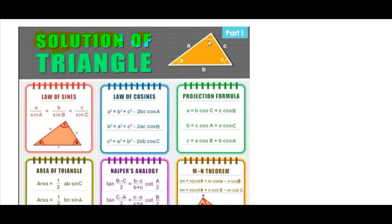So there is a triangle. Let's name this triangle ABC. The sides are: AB is c, AC is b, and BC is a. The angle opposite to side a is A, side b is B, and side c is C. In the properties of the triangle, we will discuss about the law of sines, law of cosines, projection formula, area of the triangle, Napier's analogy, and the MN theorem.